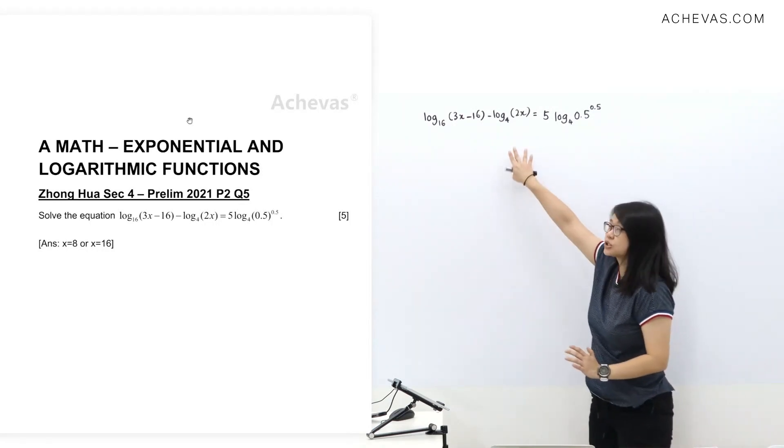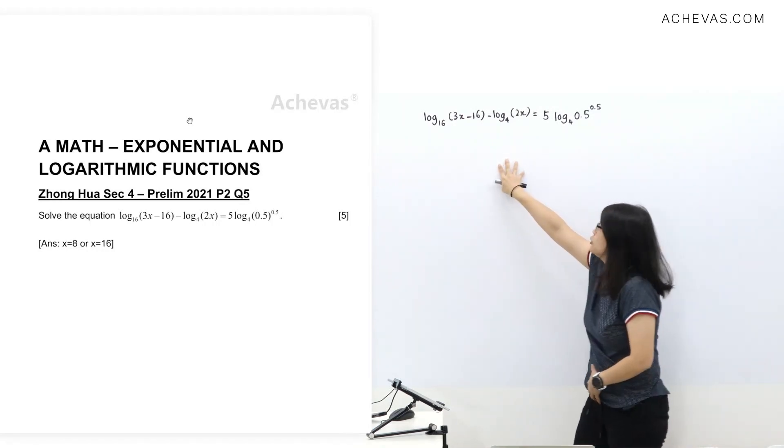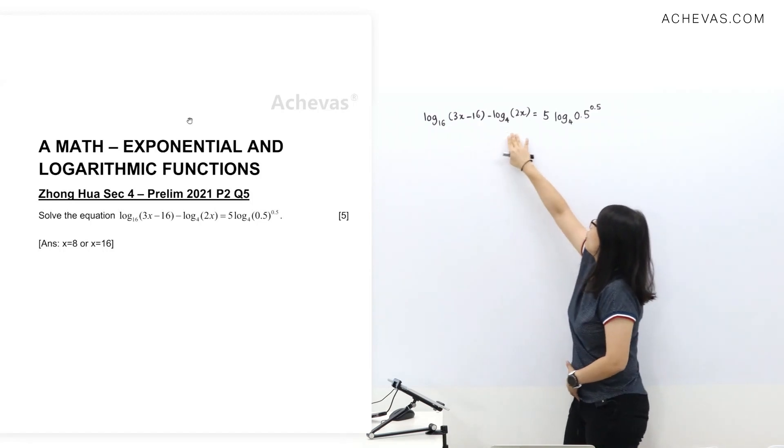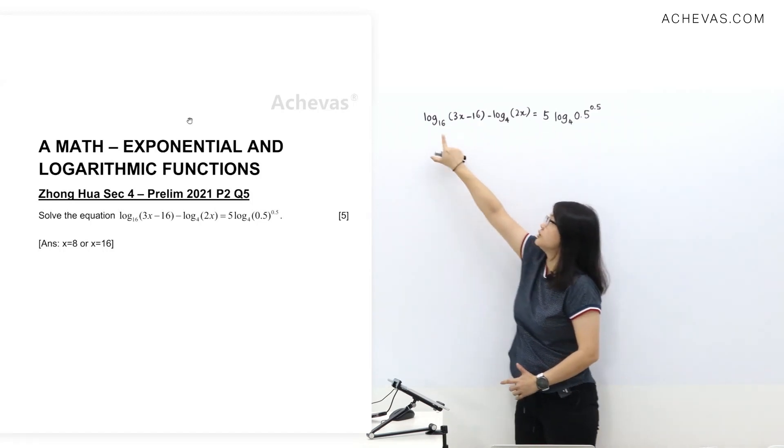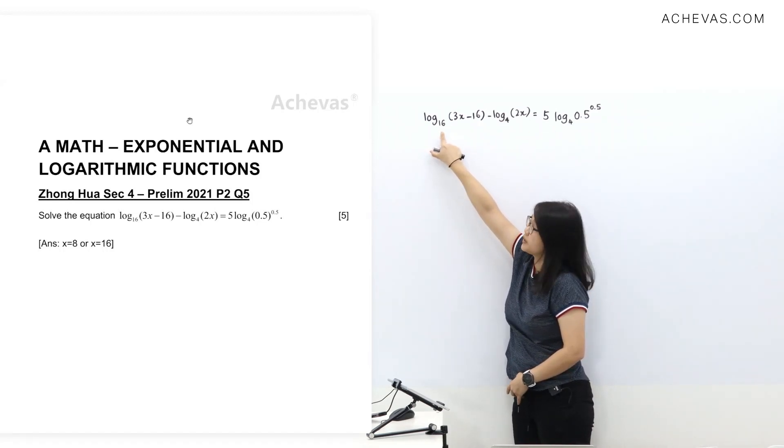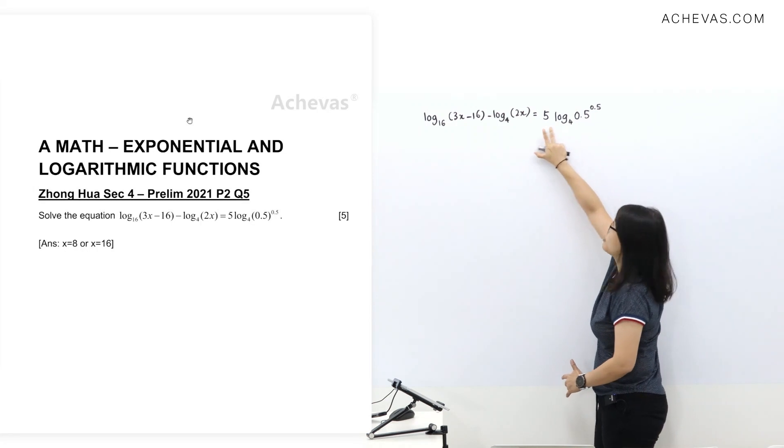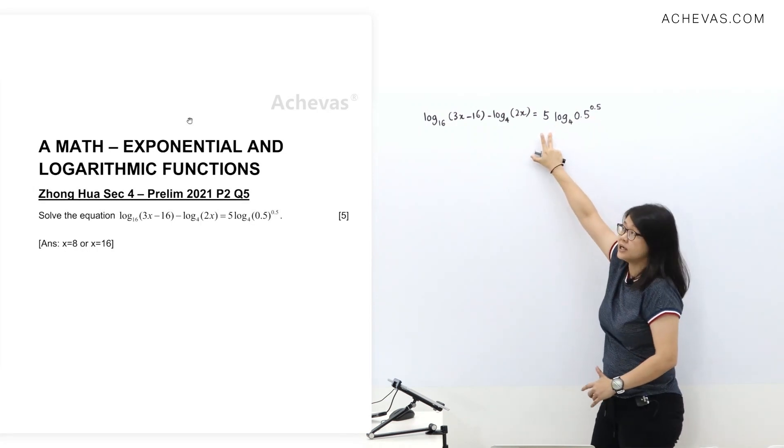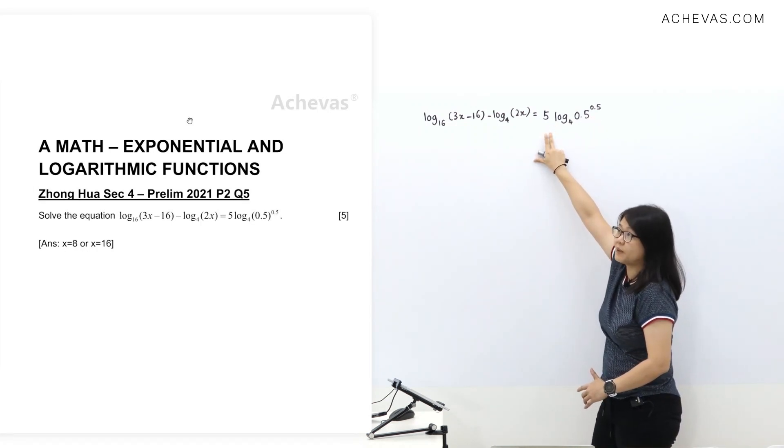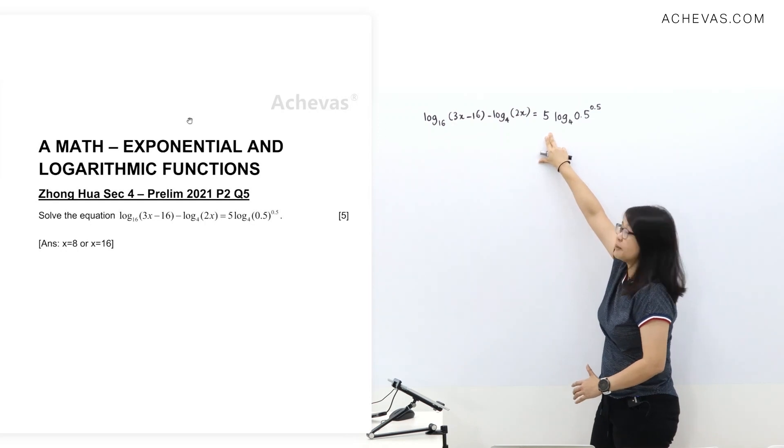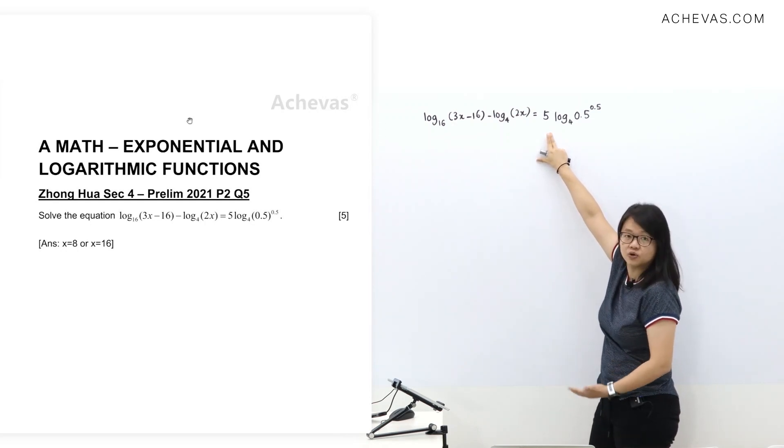Before we start doing this question, let's observe what is here. We have log 16, log 4, log 4. So you know that you will need to do change your base here. Second, we have this one, so you know that you can apply a power rule. You can bring up or bring down. I will let you know my decision later, but you can pause this video and try to do it on your own first.